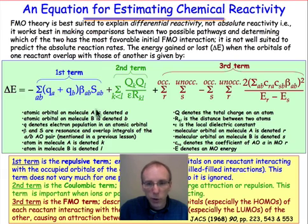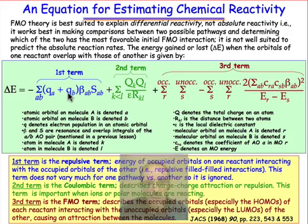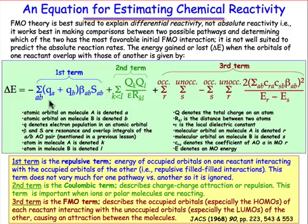No doubt this equation looks pretty daunting, but buried in it is the FMO conclusion that we reached on the previous slide. So how is it that the FMO prediction emerges from this equation?